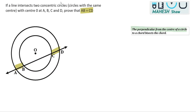To prove this, we will use the property that a perpendicular from the center of a circle bisects the chord. We draw OM perpendicular from the center O to the line AD, where M is the foot of the perpendicular.